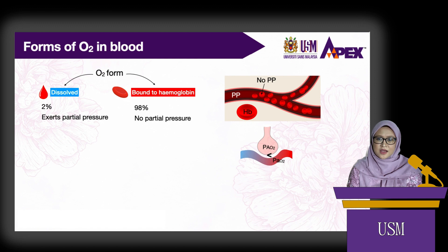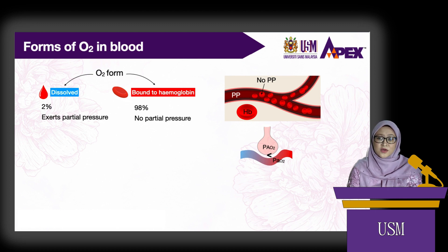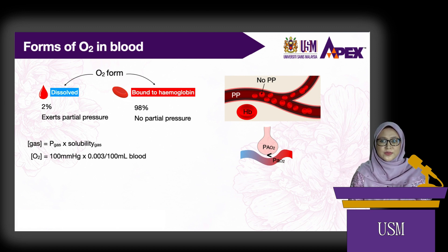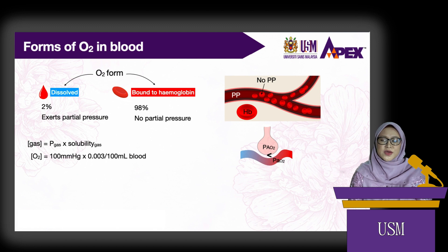Although dissolved oxygen is important, oxygen bound to hemoglobin is even more important to meet the tissues' demand for oxygen. According to Henry's law, the concentration of a dissolved gas is proportional to its partial pressure times its solubility constant. So the concentration of oxygen in the blood equals its partial pressure in the arteries — 100 mmHg — times oxygen's solubility constant in blood, which is 0.003 ml per 100 ml of blood per mmHg. So there is about 0.3 ml of oxygen per 100 ml of blood.